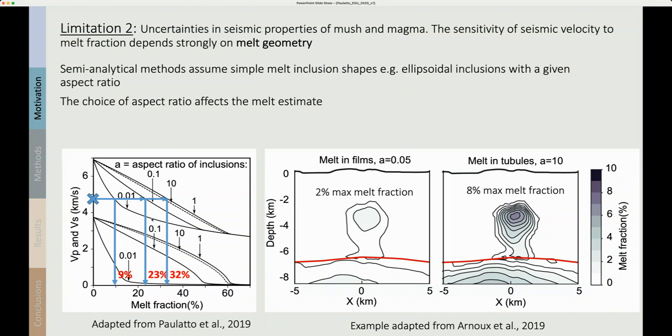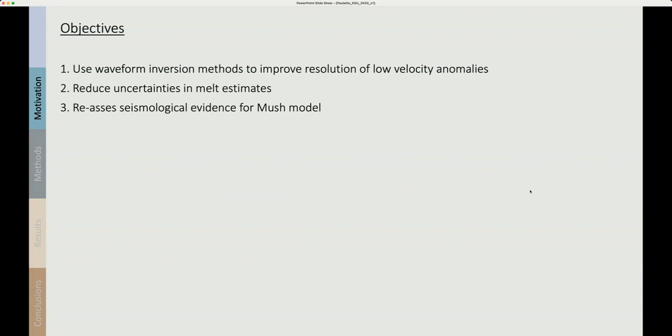An example from a recent paper by Arnoux et al. for a mid-ocean ridge shows that different assumptions for the aspect ratio lead to widely different melt fraction estimates of between 2 and 8 percent. So the objectives that I'm pursuing are to use waveform inversion to improve resolution of low velocity anomalies and also to reduce the uncertainty in melt estimates so that we can reassess the seismological evidence for the mush model.